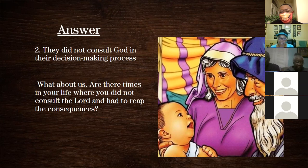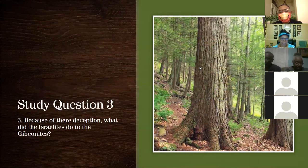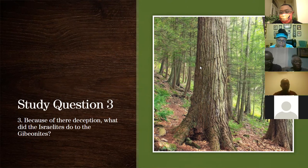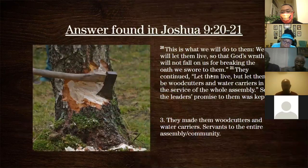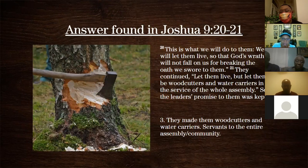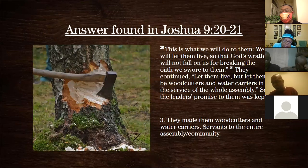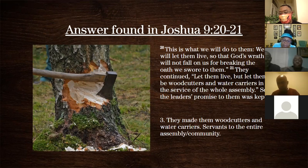Now study question three: because of their deception, what did the Israelites do to the Gibeonites — what was their punishment? They were made to be wood cutters and water carriers for the camp. Found in Joshua 9:20-21: 'This is what we will do to them — we will let them live so that God's wrath will not fall on us for breaking the oath we swore to them. Let them live but let them be wood cutters and water carriers in the service of the whole assembly.' So the leaders' promise was kept.